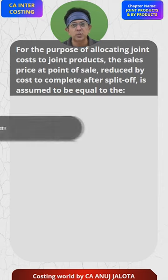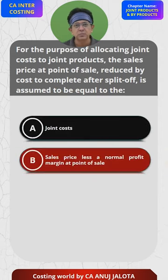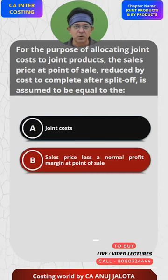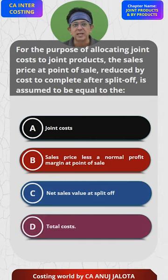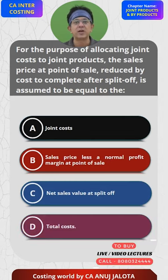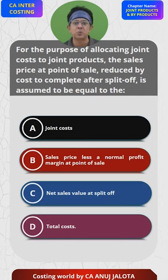This will be assumed to be equal to what? Joint cost? Option A: sales value less normal profit margin at the point of sale. Option C: net sales value at split-off point. Option D: total cost. Obviously the answer is notional sales value. If you all remember, how does the notional sales value method work?